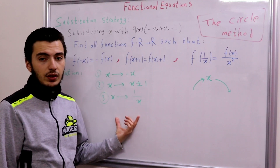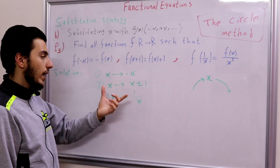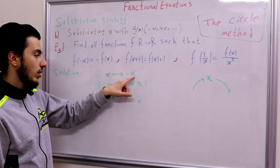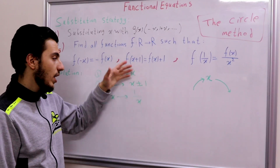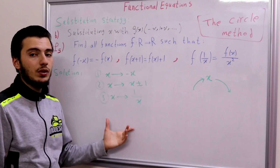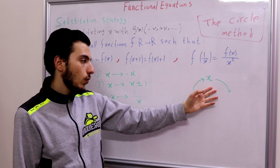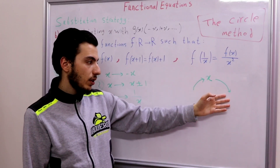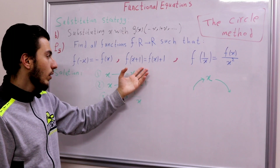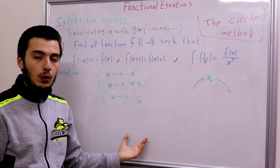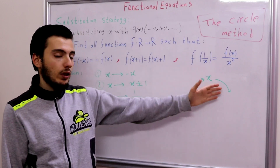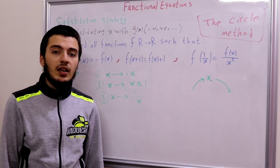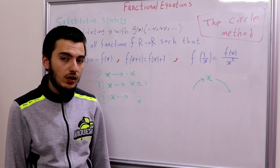We can simplify things by noticing that it is useless to do any of these three processes twice consecutively. If you take minus x twice you end up with x, and the same holds for the second and third processes. So we will never do a process twice in a row. Try guessing this circle yourself — give yourself a pat on the back if you can, because it's really hard. If you can't, don't worry because we will draw this circle together.